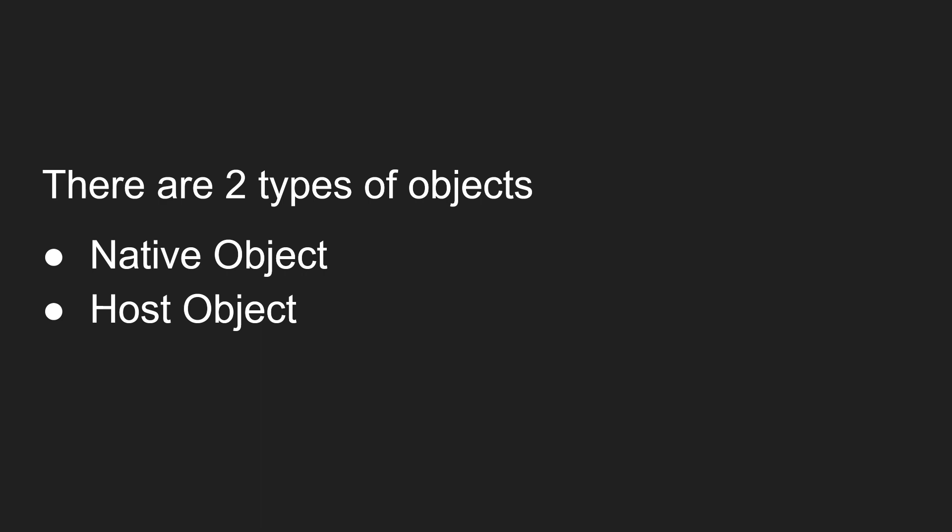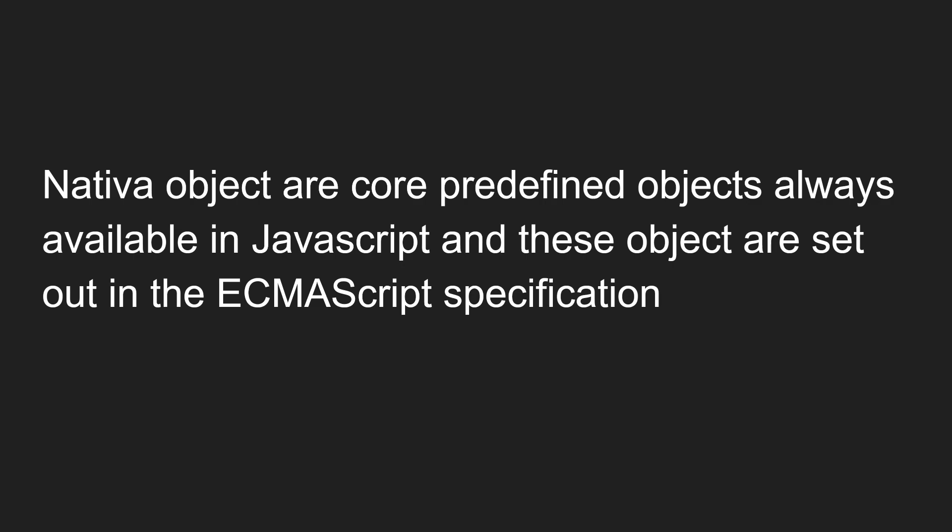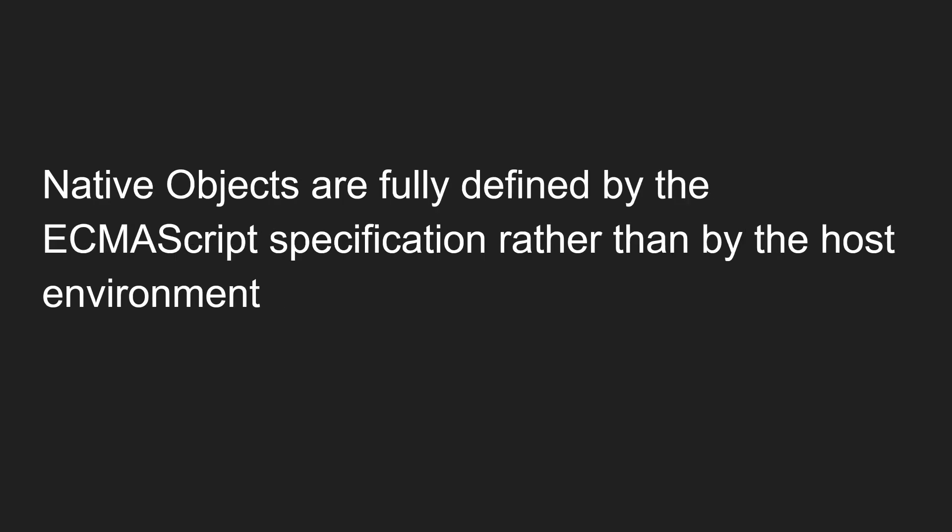So what is a native object and what is a host object? Native objects are core predefined objects always available in JavaScript. These objects are set out in the ECMAScript specification. ECMAScript is an organization which controls JavaScript and releases its versions. Native objects are fully defined by the ECMAScript specification rather than by the host environment.